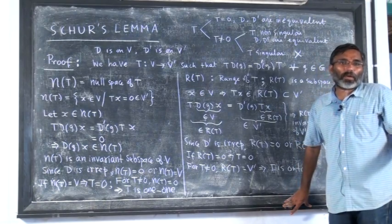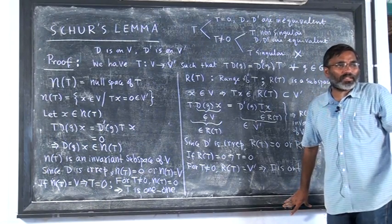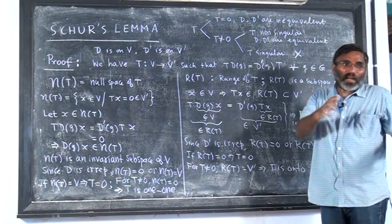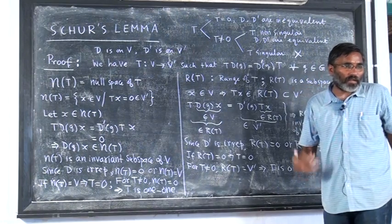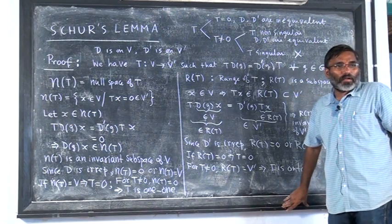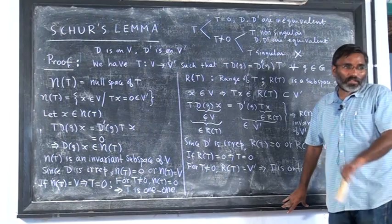Completeness is the property of the space itself. Invariance is the property of the space under some action of an additional group representation.